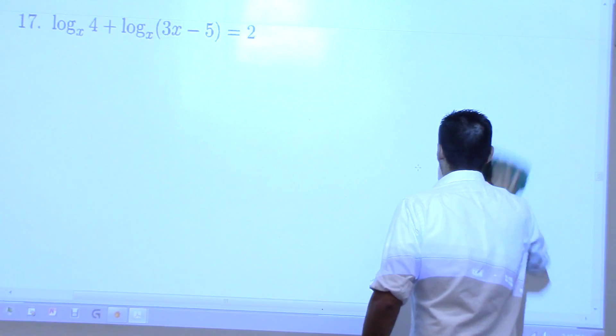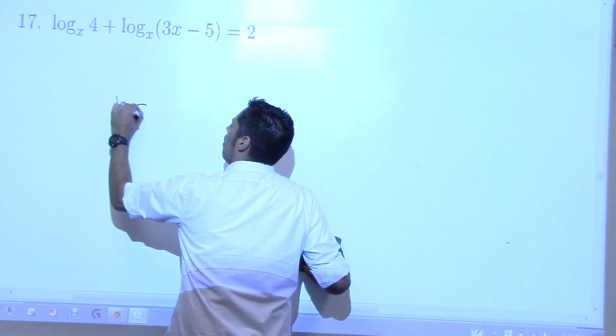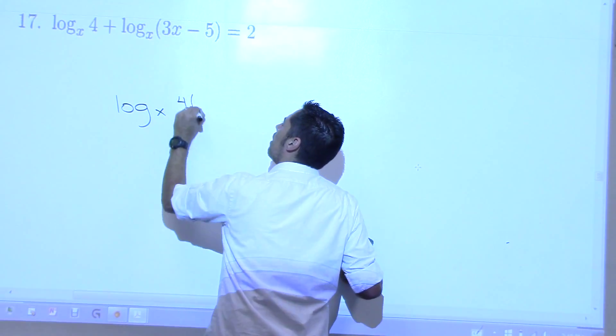I know we're almost out of time, but look, I would put these two logs together. Log base X of 4 times 3X minus 5, right? Must equal to...